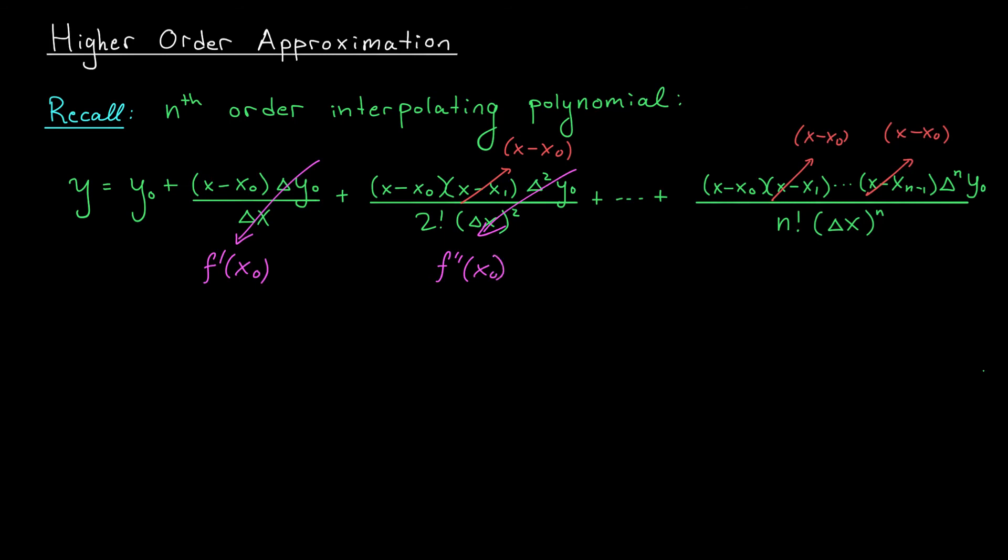Now we aren't going to prove this, but the pattern does continue. In general, Δⁿy_0 over Δxⁿ is going to approach our nth derivative at x_0, f⁽ⁿ⁾(x_0).